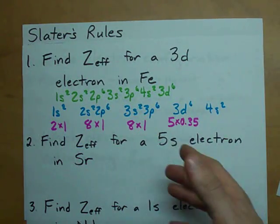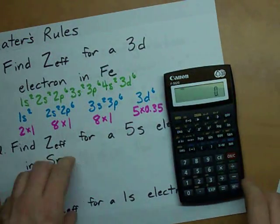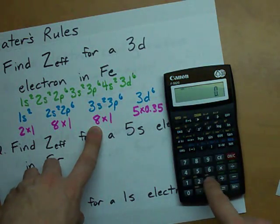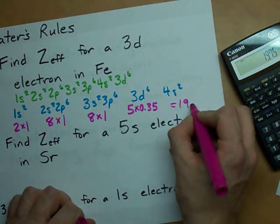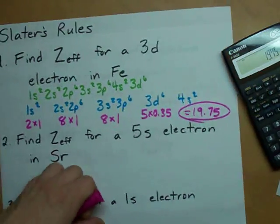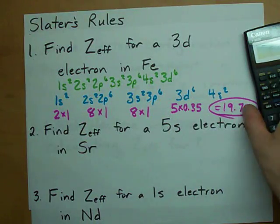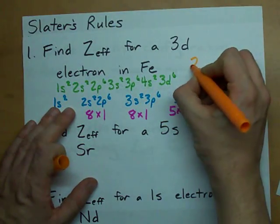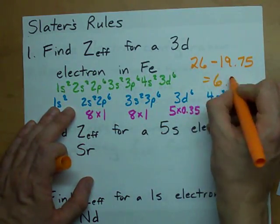2 plus 8 plus 8 plus 5 times 0.35. 2 plus 8 plus 8 plus 5 times 0.35 gives me a total of 19.75. This is the total amount of shielding. Notice there's more shielding for electrons that are closer than the electron you're talking about. Finally, the final effective nuclear charge. You just take your atomic number, 26, and subtract that shielding, 19.75, and you get your answer, 6.25.